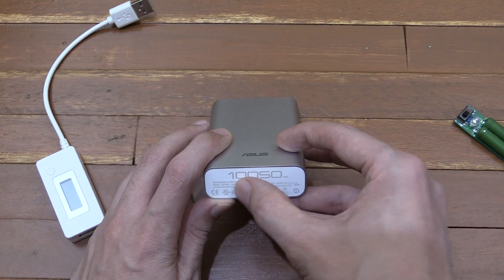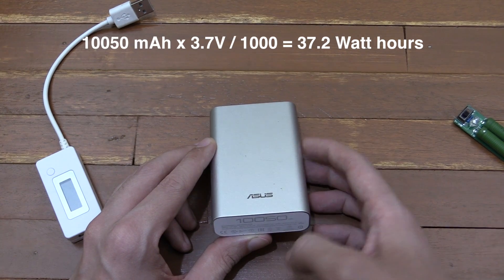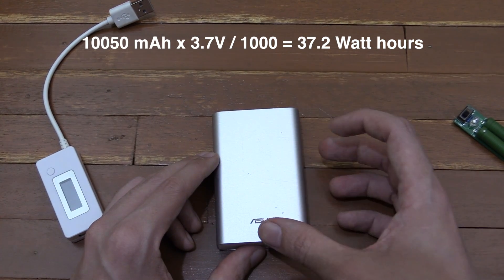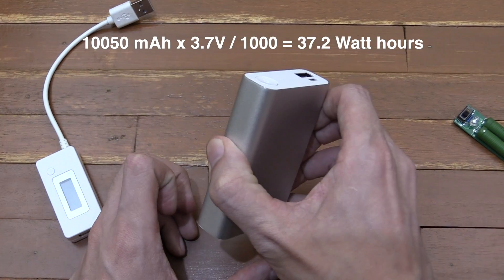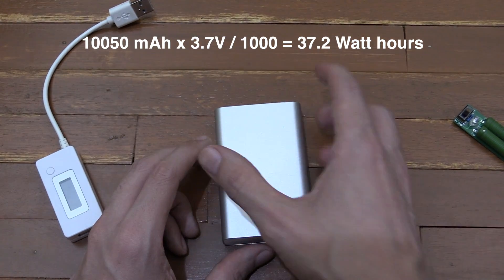Now if we take this 10,050, multiply it by the voltage of the cells, so 3.7 volts, and divide it by 1,000, that gives us 37.2 watt hours. So that's a much more accurate way to measure a power bank is in watt hours, because when we take the power out, we're taking it at 5 volts instead of 3.7 volts.